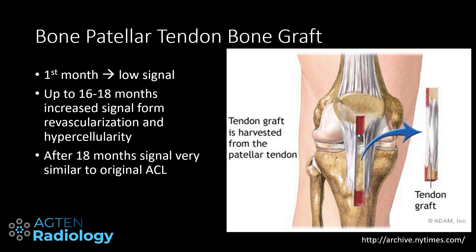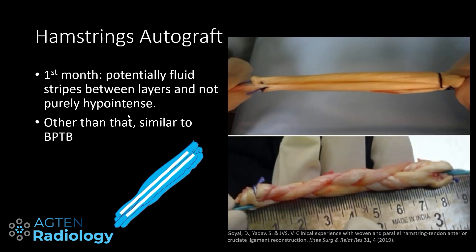For bone patellar tendon bone grafts, you take a little bone from the inferior patellar pole, the midsection of the patellar ligament, and a small bone piece at the tibial tuberosity as your graft, placing the bones into tunnels. Initially it will be low signal in the first month as it's still the same low-vascular tissue. Between around 16 to 18 months there is an increase in signal intensity, and one study showed it takes up to 18 months for the signal to resemble the original ACL.